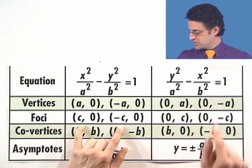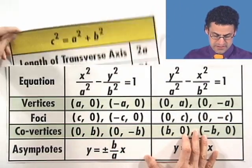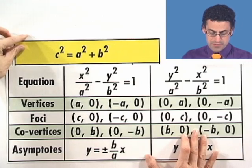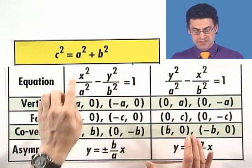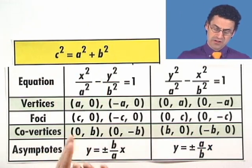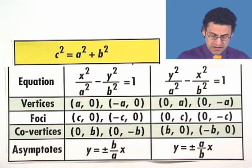The foci, which are the points that we were talking about earlier for the constant difference, turn out to actually now be, remember, with the ellipse it was a squared minus b squared. Now, notice we switch again and we see a squared plus b squared.